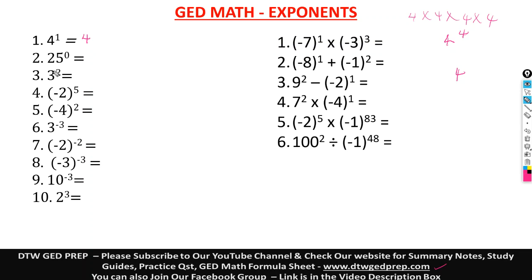Let's go to the next example: 3 raised to power 2. That means 3 times 3 — that's 3 in 2 places. What is 3 times 3? That gives us 9. So our solution to this is 9.